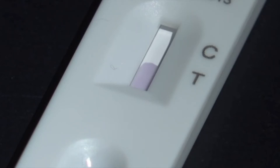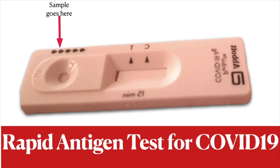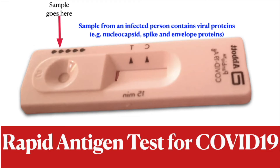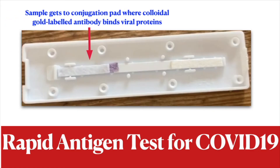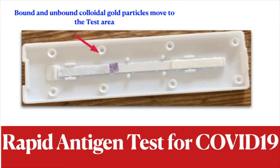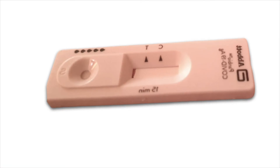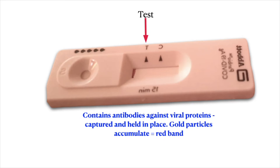If we have a look at a sample from an infected person, when you place it, it will travel along and go to the colloidal gold conjugated antibody section. What happens is the antibody and the colloidal gold will be drawn along by the absorbent pad to the test area. The gold particles, which appear red, will move along with the antibody until they get to the test area. On the test area, you've got antibodies specific to the viral proteins, but this time they don't move along. If there are viral proteins in the sample, it will stop at the test area, and as it accumulates, the gold particles accumulate because they're conjugated to the antibody.